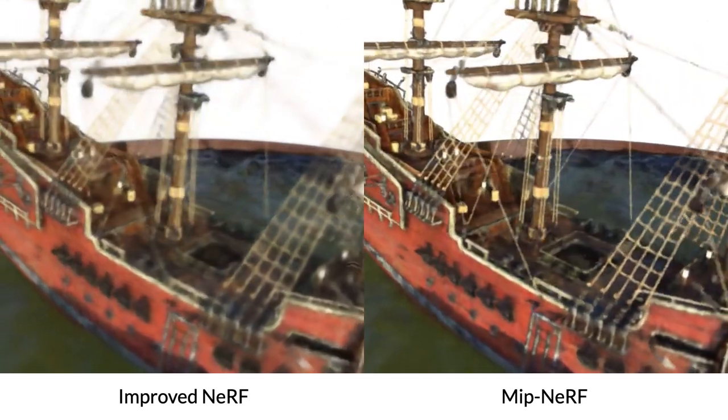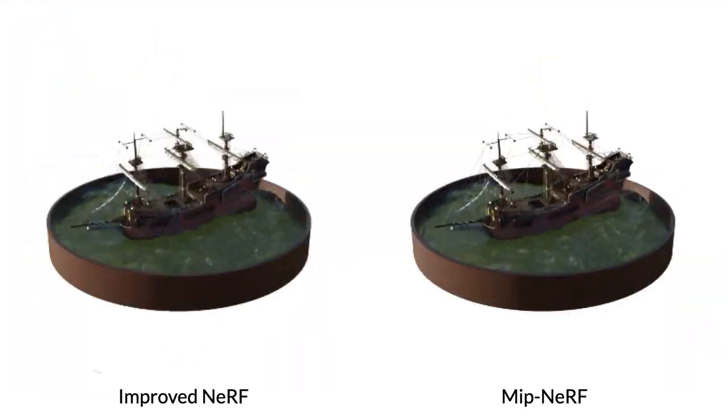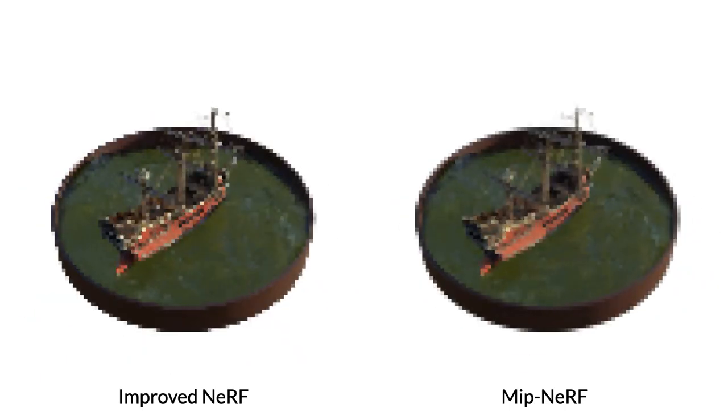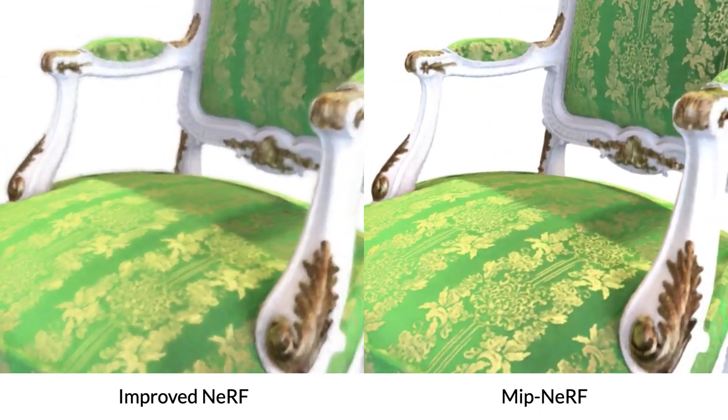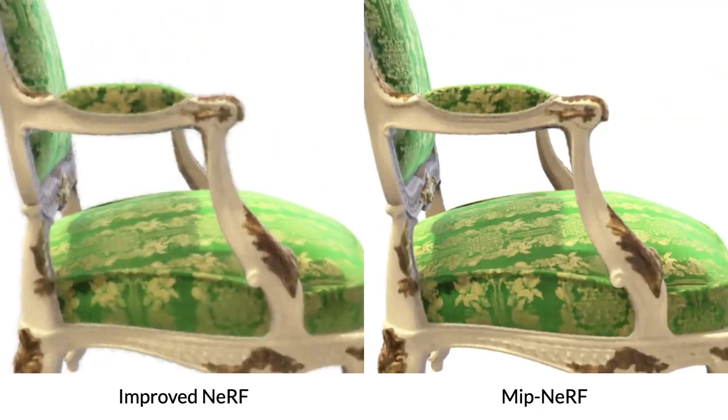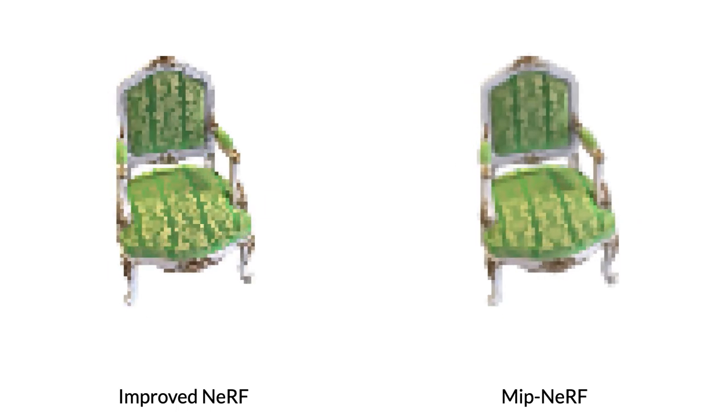Now here are some results on this multi-scale blender dataset that we've been using, where Nerf is on the left, and MIPNERF is on the right. You can see that when the camera zooms out, Nerf tends to have a lot of jaggies and aliasing artifacts, and when the camera zooms in, Nerf tends to be over-smoothed and blurry. In contrast, MIPNERF is able to produce photorealistic renderings across all scales.